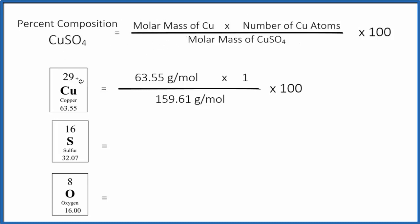So for copper, let's do that first. Take the molar mass of copper right here, 63.55 grams per mole. We multiply that by the number of copper atoms. We only have one, so we just have our one copper atom. We multiply,